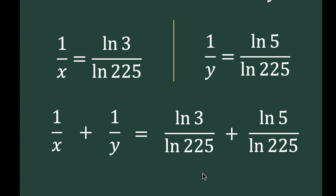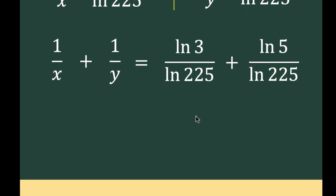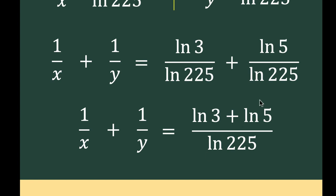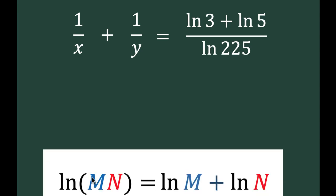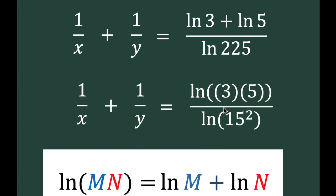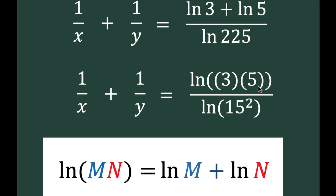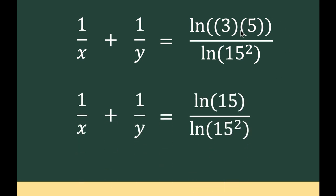We have a common denominator of ln of 225, so this becomes ln of 3 plus ln of 5, all over ln of 225. Let's recall another property of logarithm: the logarithm of a product m times n equals ln m plus ln n. By this property, we can write the numerator as ln of 3 times 5, which simplifies to ln of 15.